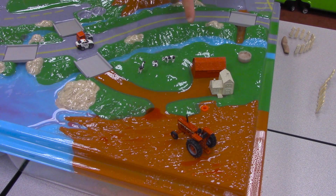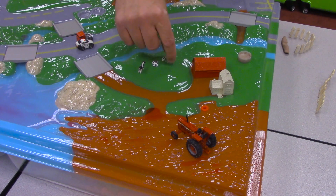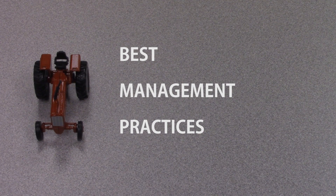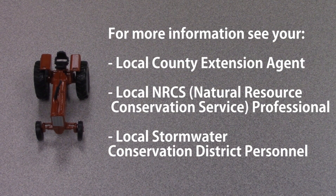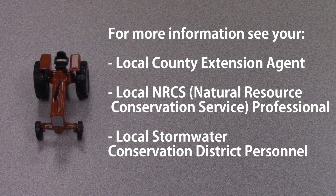Now that sources of pollution have been discussed for both the fields and animal areas, we'll leave the model set up and talk about some of the best management practices, or BMPs, that can be used on the land to hopefully reduce and stop the movement of pollutants off-site. For more information about BMPs, you can see your local county extension agent, your local NRCS professional, or your local soil and water conservation district personnel here in Georgia. To show some of the BMPs that can be used — and this is not a complete list — we'll start with our cropland.